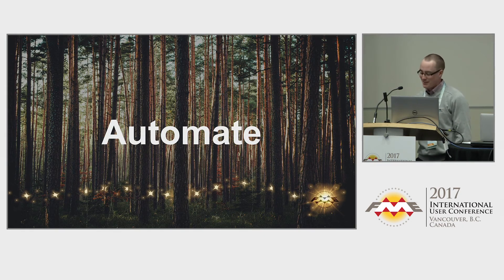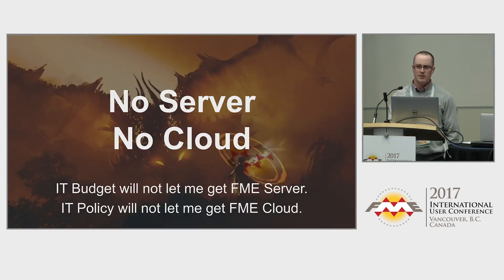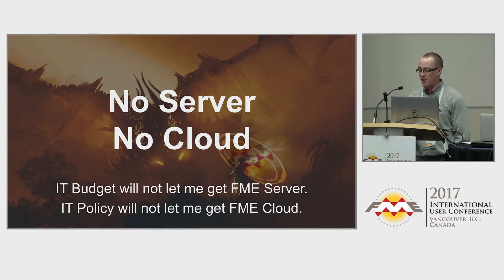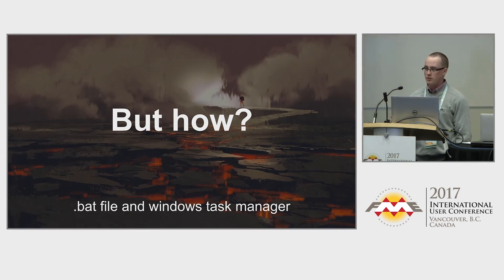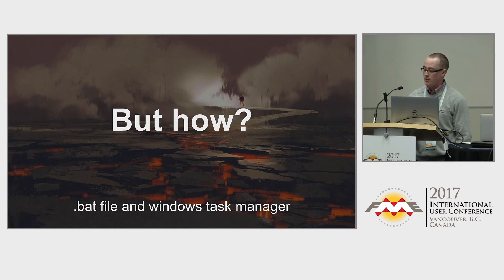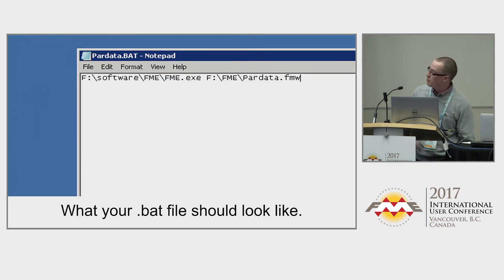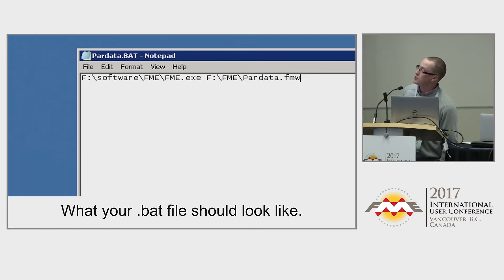You might be asking: how do we do that? Windows Task Scheduler, if you're on PC — there's a similar tool for Mac as well. All that's required is a BAT file, which is a batch file, and Windows Task Scheduler. You create your workspace as you normally would, save it, make sure it runs with a test run, then open a text file and write the path to your FME instance — not the workbench, just the FME engine — and then the workspace file. Save that as a .bat file.